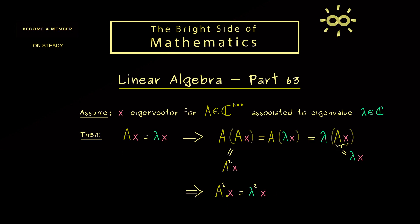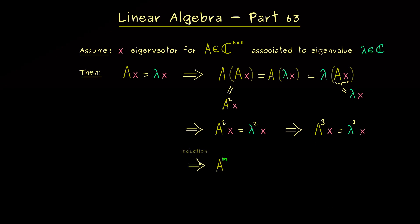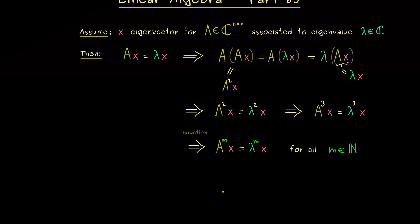This result is important to remember, because we could do the same calculation again and conclude that A³ also has x as an eigenvector. We can show by induction that we get this result for every natural power of A — the power m simply transforms the eigenvalue to λ^m. And since this holds for every natural power m, we can formulate this for polynomials as well, which is exactly the spectral mapping theorem we will now discuss.